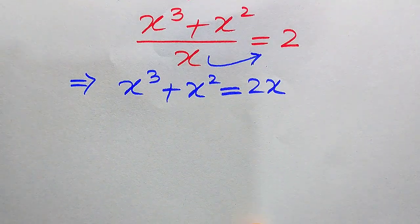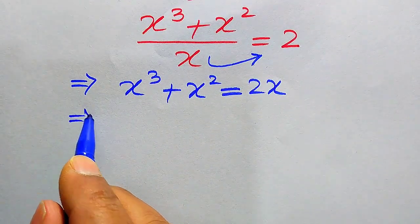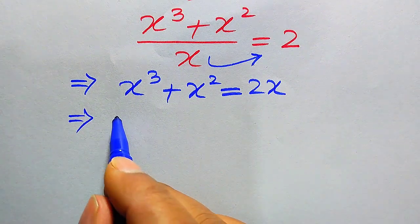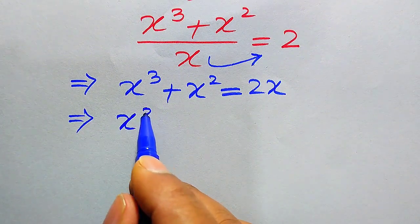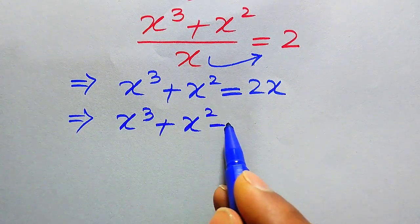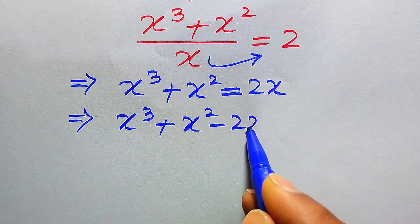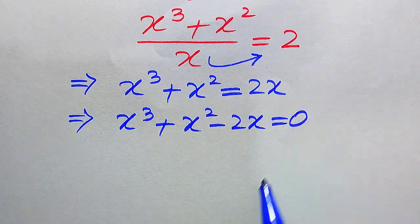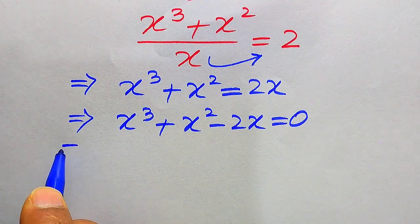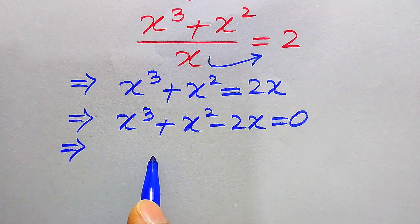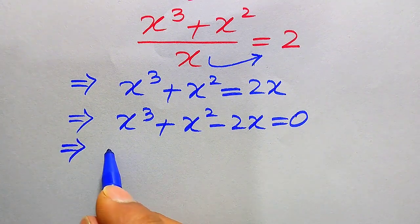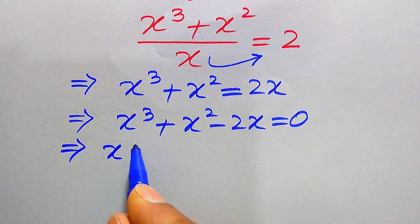Now in the next step we move 2x from the right-hand side to the left-hand side, and it will become x³ + x² − 2x, and this whole equation is equals to 0. You see here each of these terms involves x, so we need to take x as a common factor.